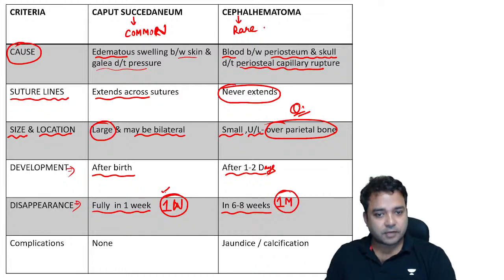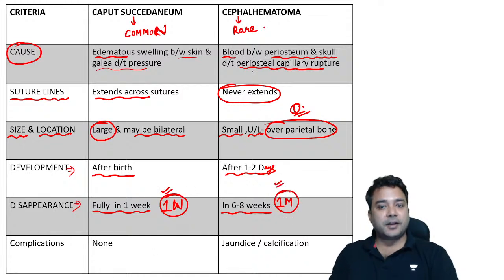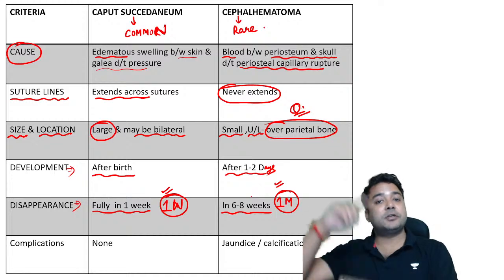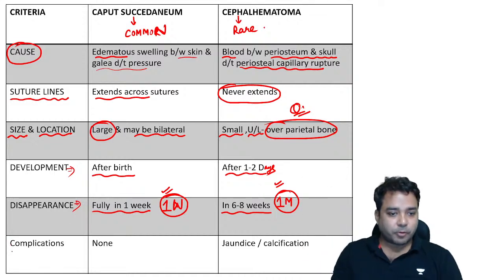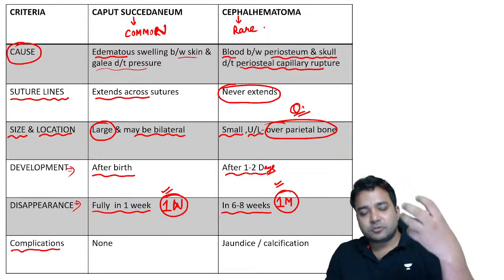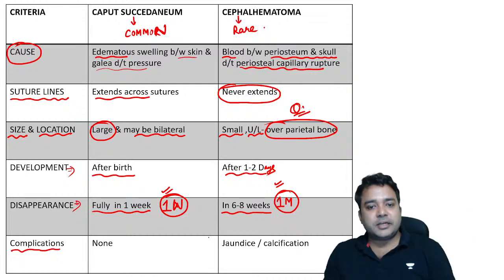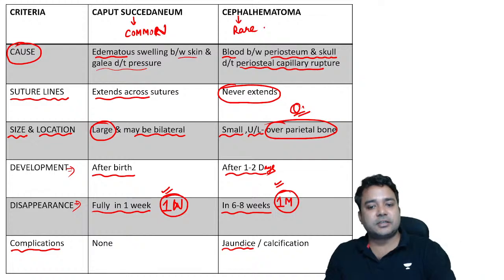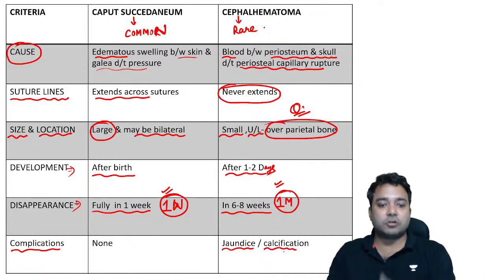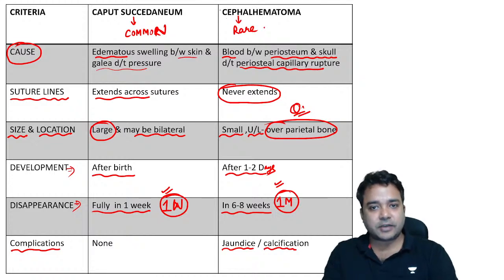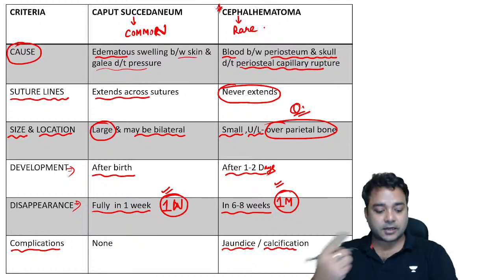Caput succedaneum disappears in about one week. Cephalhaematoma is progressive initially but disappears in about six to eight weeks. Complications of cephalhaematoma: blood pigments are degraded and can cause jaundice-like conditions in the fetus; sometimes calcifications or ossifications are also seen. These are complications of cephalhaematoma, which is a rare condition, also asked in PG exams in relation to pregnancy and fetal deaths.